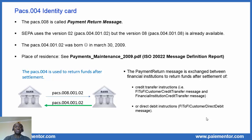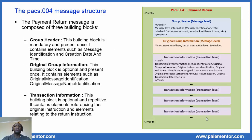How does the PAX4 message look like? The Payment Return message is composed of three building blocks: a group header, an original group information block, and a transaction information block. The group header is mandatory and present once. It contains elements such as message identification and creation date and time — elements related to the whole message. The original group information block is optional and present only once. It contains elements such as original message identification or original message name identification, so it refers to the original message as a whole.